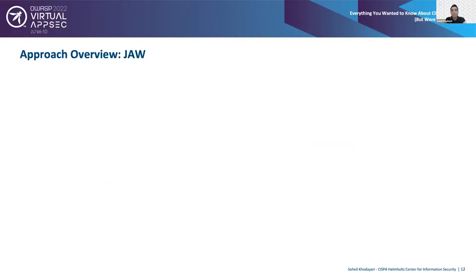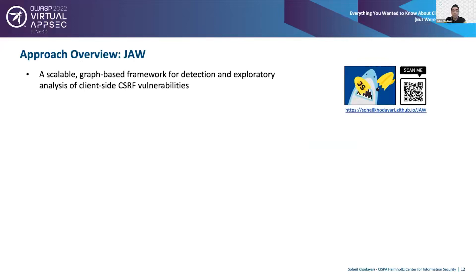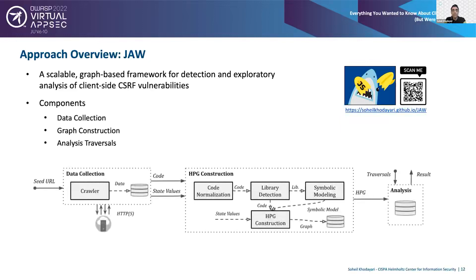To address these challenges, we present JAW: a scalable hybrid framework for detection and exploratory analysis of client-side CSRF vulnerabilities, leveraging property graphs and declarative traversals. At a high level, JAW comprises three components: data collection, model construction, and vulnerability analysis. Data collection gathers the client-side source code and runtime information; graph construction creates an intermediate representation; and vulnerability analysis queries this model to detect vulnerabilities.